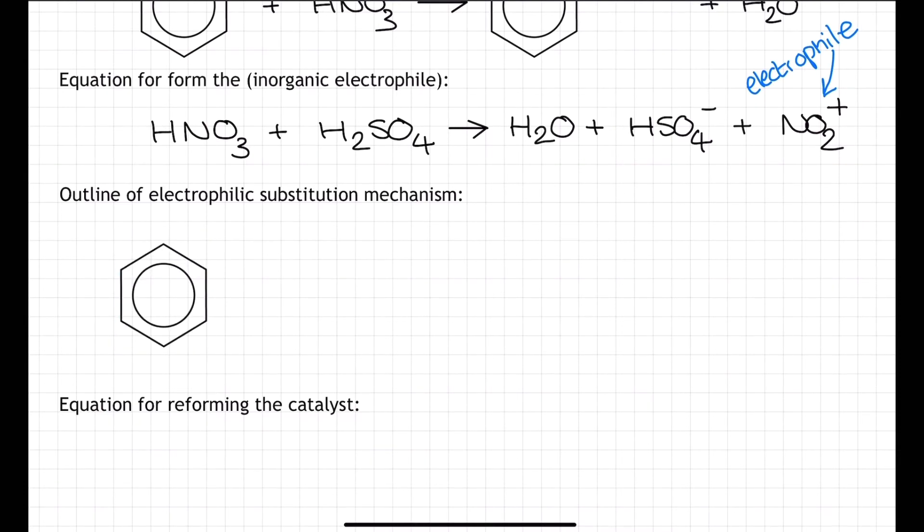The electrophilic substitution mechanism is outlined in two stages. First off, the NO2 plus electrophile attacks the delocalized pi system. We represent this by showing a curly arrow from the ring right up to the nitrogen on the NO2 plus. You can position the positive charge on the electrophile here either directly on the nitrogen or just towards the top right hand corner of the structure, although it is preferred on the nitrogen.